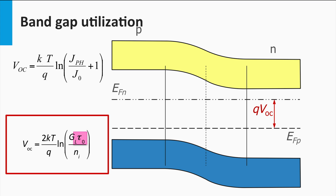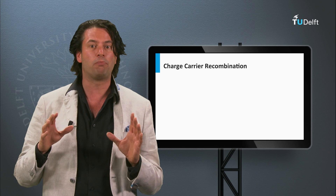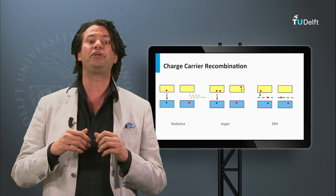Secondly, we see that the lifetime plays an important role. The larger the lifetime of the minority charge carrier, the larger the open-circuit voltage can be. Or in other words, the longer the lifetime, the larger the splitting between the quasi-Fermi levels is possible and the larger fraction of the bandgap energy can be utilized. The lifetime of the minority charge carriers is determined by the recombination rate. As discussed last week, we have three different recombination mechanisms: radiative, Auger, and Shockley-Reed-Hall.